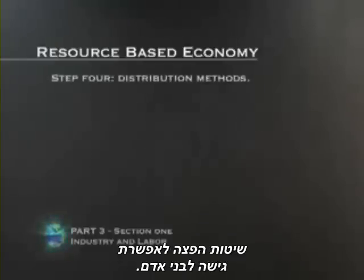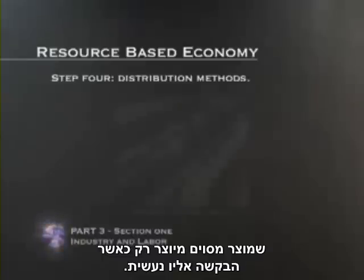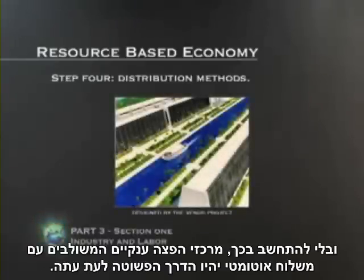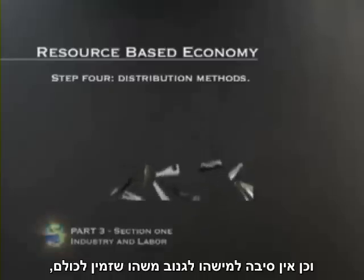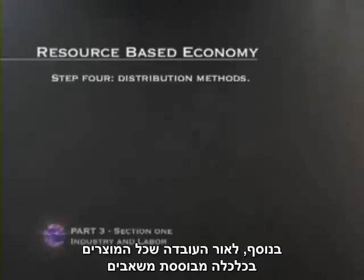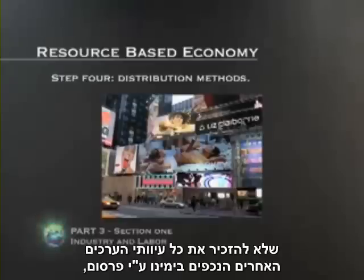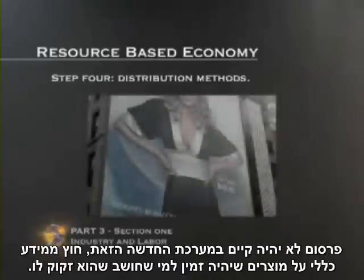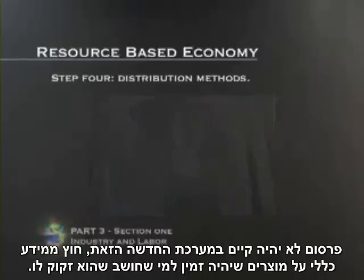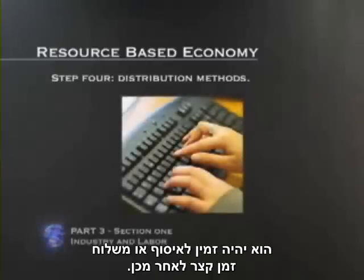Step 4: Distribution methods for human access. Distribution methods would also depend on the state of technology. For instance, production could theoretically become so streamlined that a product is only created when the request is actually made. Regardless, warehouse-like distribution centers along with automated delivery would be the most simplistic way for now. Also, since there is no money used in this system, there is little need for a person to hoard their items and there is also no reason to steal something that is available to everyone. Also, in light of the fact that all goods in a resource-based economy are designed to last as long as possible, the consumer culture values that exist today would also be outgrown. Advertising would not exist in this new system outside of general product information. To obtain a product, a person would likely just go online, search for the item's functionality, select the item and request it. It would be available for pickup or delivery soon after.